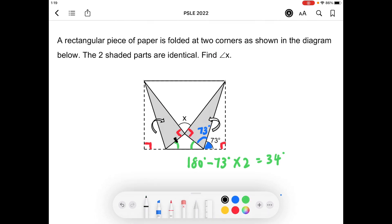these two lines are equal as they mentioned that the two shaded parts are identical. So that is actually an isosceles triangle. So if this is also 34 degrees, we can find the angle that I'm going to mark in